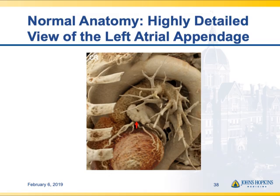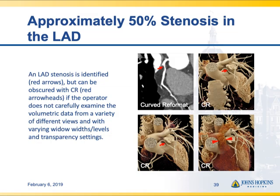Here's an example of normal anatomy — the left atrial appendage — just to show the remarkable level of detail you can achieve with good presets and window width and level settings with cinematic rendering. Here's an example of a stenosis in the left anterior descending coronary artery.